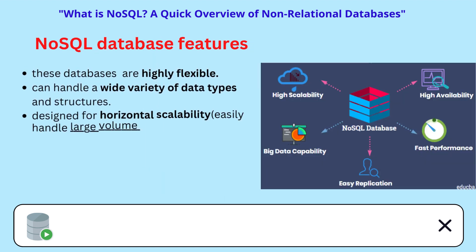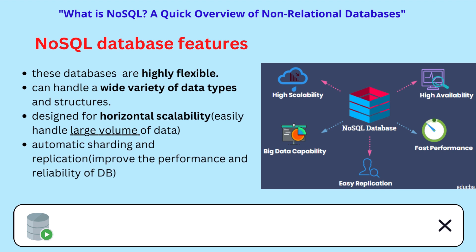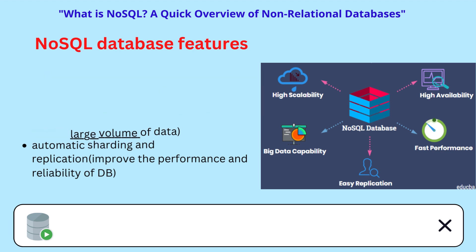NoSQL databases are highly flexible and can handle a wide variety of data types and structures. They are also often designed for horizontal scalability, which means that they can easily handle a large volume of data by adding more servers to the database cluster. Some NoSQL databases offer features such as automatic sharding and replication, which can improve the performance and reliability of the database.